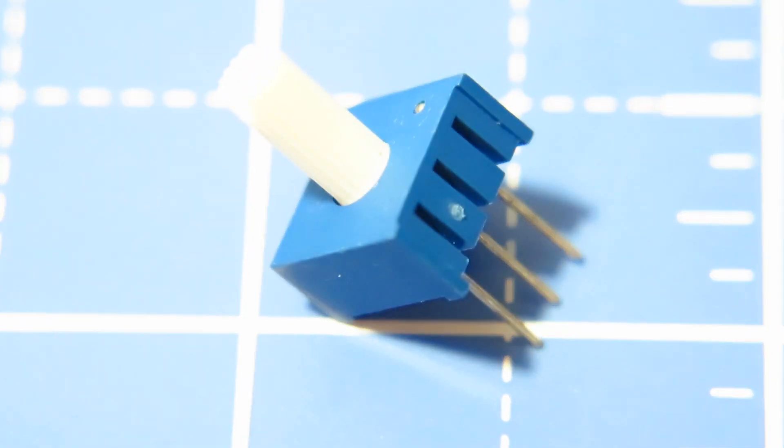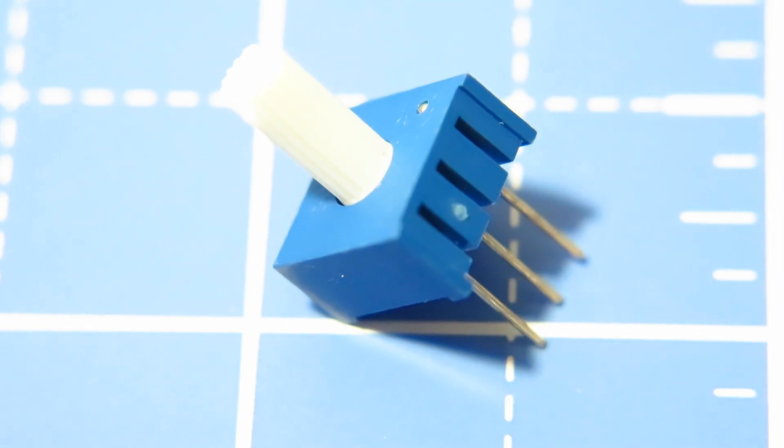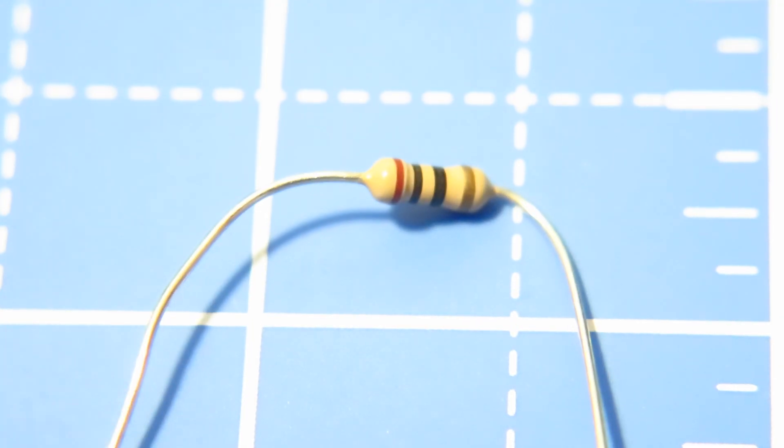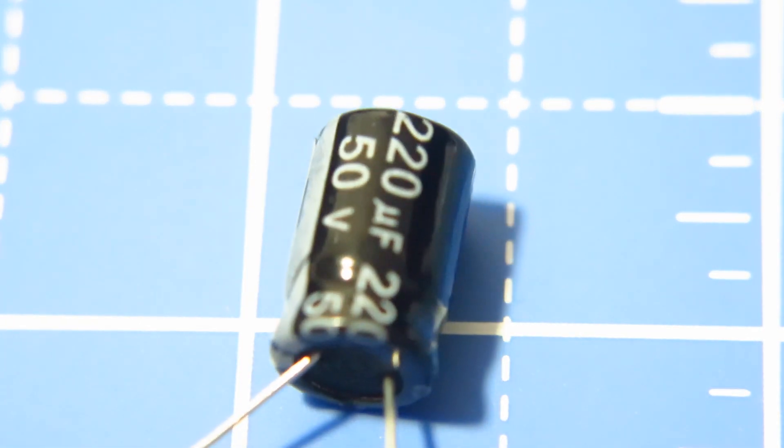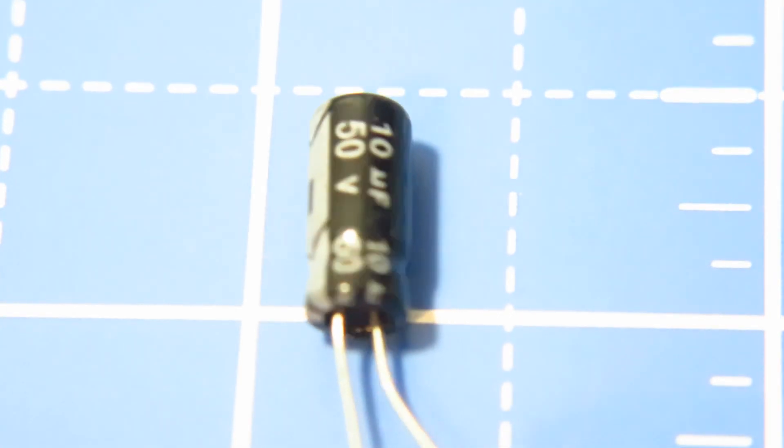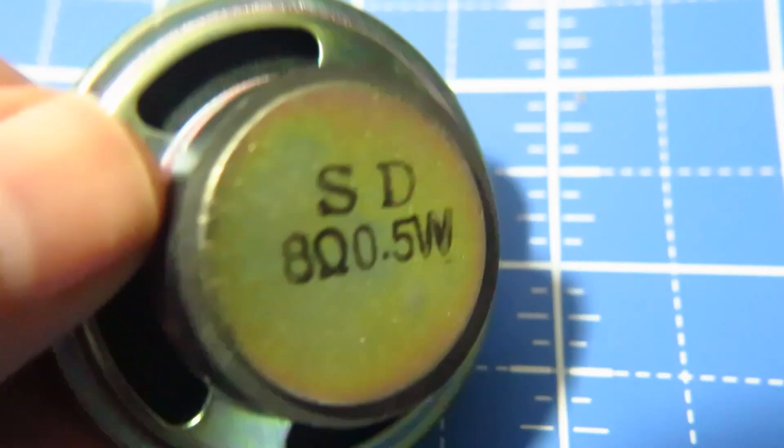So aside from the op amp we're also going to need a 10k potentiometer that's going to be used for the volume, a 10 ohm resistor, a 1k ohm resistor, two 220 microfarad capacitors, and one 10 microfarad capacitor. And obviously you'll need a speaker.